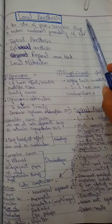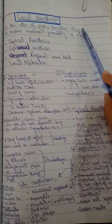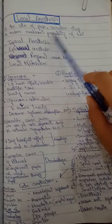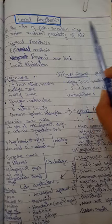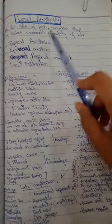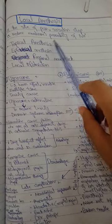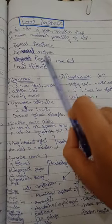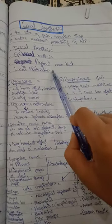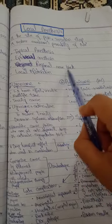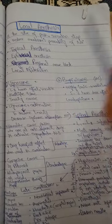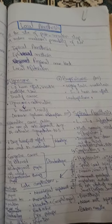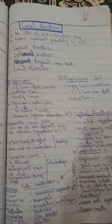At the site of pain, sensation is stopped by local anesthesia. It reduces membrane permeability to sodium. Types include topical anesthesia, epidural anesthesia, regional nerve block, and local infiltration. These are the types of local anesthesia. Now we will discuss the drugs used in local anesthesia.